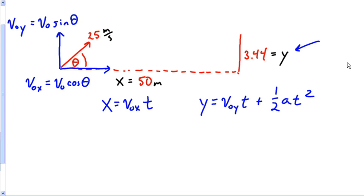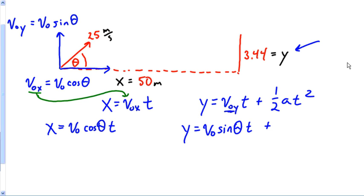X would be equal to, and I'm going to substitute VOX in, so X would be equal to V0 cosine theta t. And then over here, Y would be equal to V0 sine theta t plus one-half at squared.